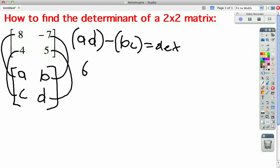So in this case, it would be 8, 5, minus negative 4, negative 7, and that's your determinant. Now you just solve.